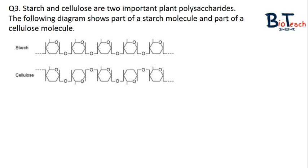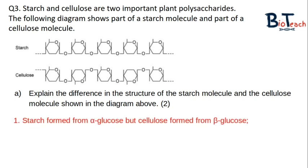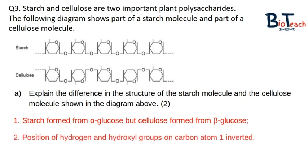Question number three gives you a diagram of a starch and cellulose molecule. Part A asks for the difference in structure of the two, worth two marks. From your knowledge, you should recall that starch is made up of alpha glucose only, but cellulose is made up of beta glucose — this is the first marking point. The second point is awarded for saying that in cellulose, we get an inversion of the position of the carbon-1 atom. Whenever you're explaining the difference between two things, you must state how both of them are different, so you would state that starch is made up of alpha and cellulose is made up of beta glucose.